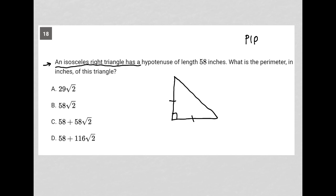So an isosceles right triangle has a hypotenuse of length 58, so I label that as 58 inches. What is the perimeter in inches of this right triangle? Okay, so perimeter would just be to add this unknown value x plus this unknown value x plus 58, right? So x plus x plus 58 should equal the perimeter. Well, how do I find what these x values are?